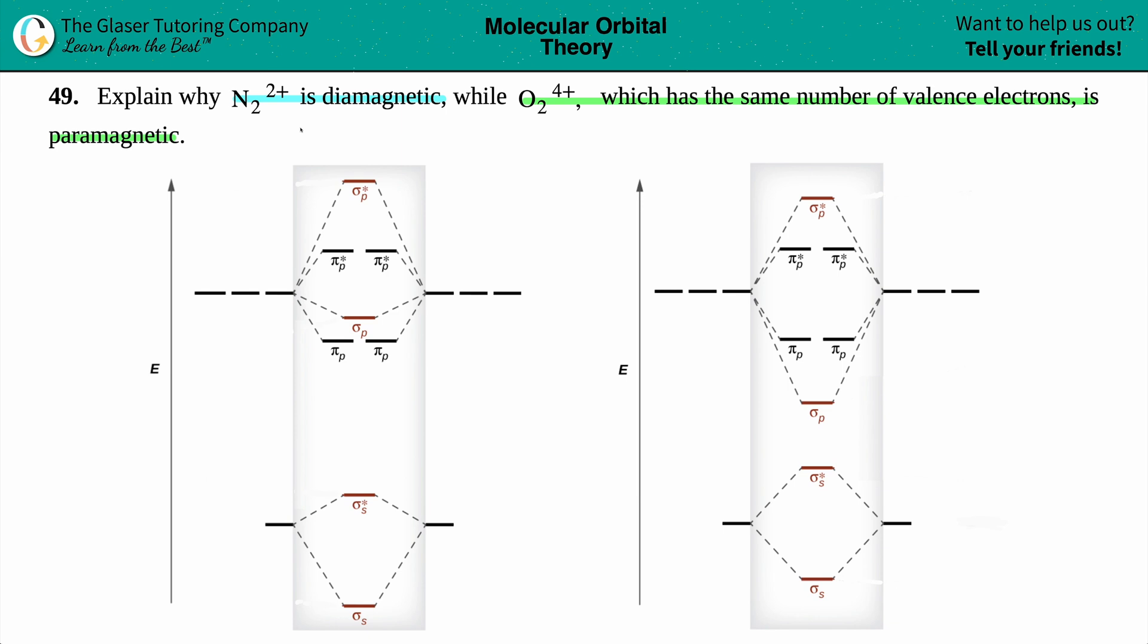Now just know that this is the one that has SP mixing and this one is no SP mixing. Now the reason here is because of the total amount of electrons and what group you're in. Just know that if you have SP mixing, you will be in group one through five or 1A, 2A, 3A, 4A, 5A. For this one, you're going to finish it out as group six through eight or 6A, 7A, or 8A.